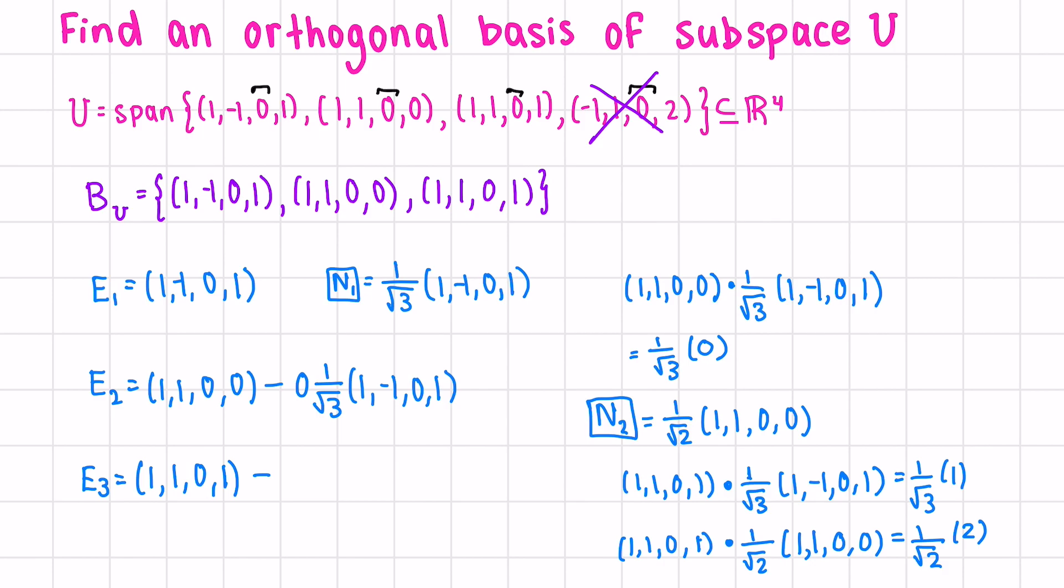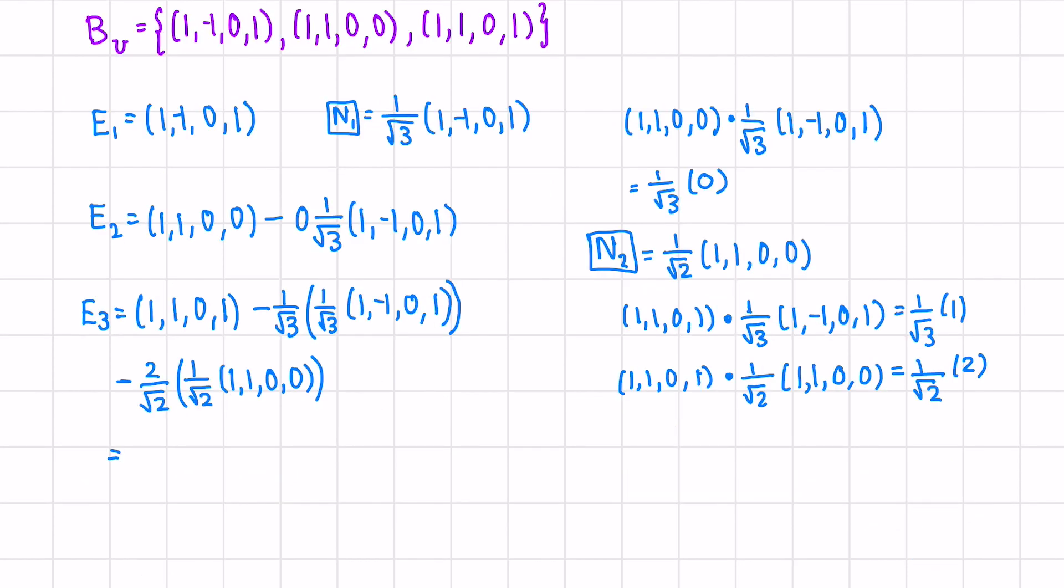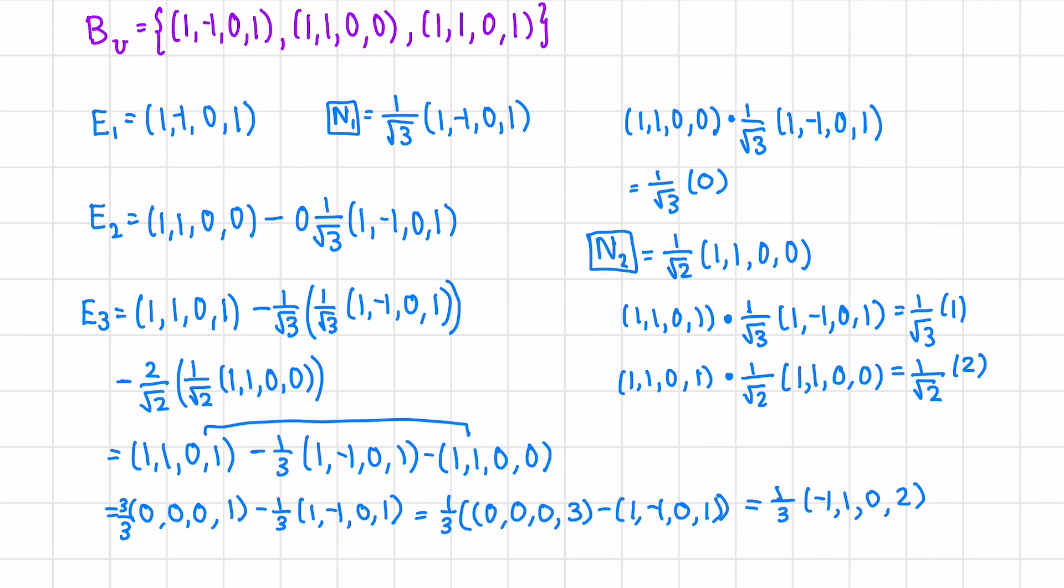So now we can plug all this in. So we have our vector, our third vector, minus how much of n_1 has been covered, 1 over root 3 times n_1, minus 2 over root 2 times n_2. Let's simplify. We can add these two vectors together first. Next, if we write a 3 over 3 in front of our first vector, we can factor out 1 over 3 from both coordinates.